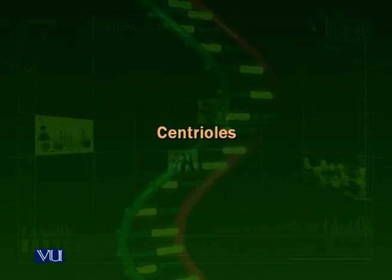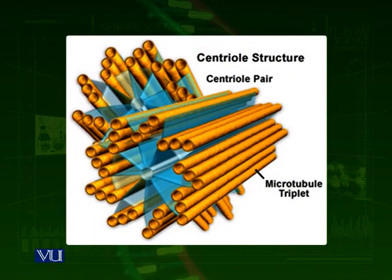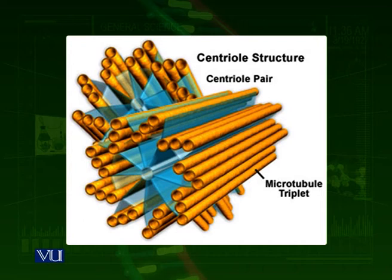Next are the centrioles. These are organelles present inside the cell near the nucleus. They are hollow and cylindrical bodies. Two are present near the nucleus, collectively called the centrosome. Their function is during cell division — when the cell divides, these centrioles move towards the sides of the nucleus and form the spindle fibers. These are present in animal cells.